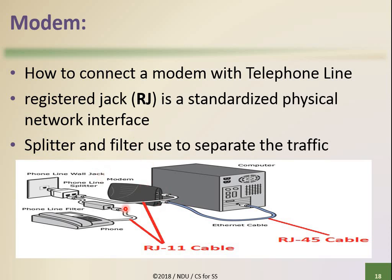Here is another example showing how to connect the modem with the system or computer. In this picture we have a representation of a telephone line system. We have one wire coming into your home - that is the phone line wall jack. One wire comes into your home and is separated by a separator into two parts. One part goes towards the modem, which performs the analog to digital (A to D) conversion, and the signal then moves to your computer via an ethernet cable.